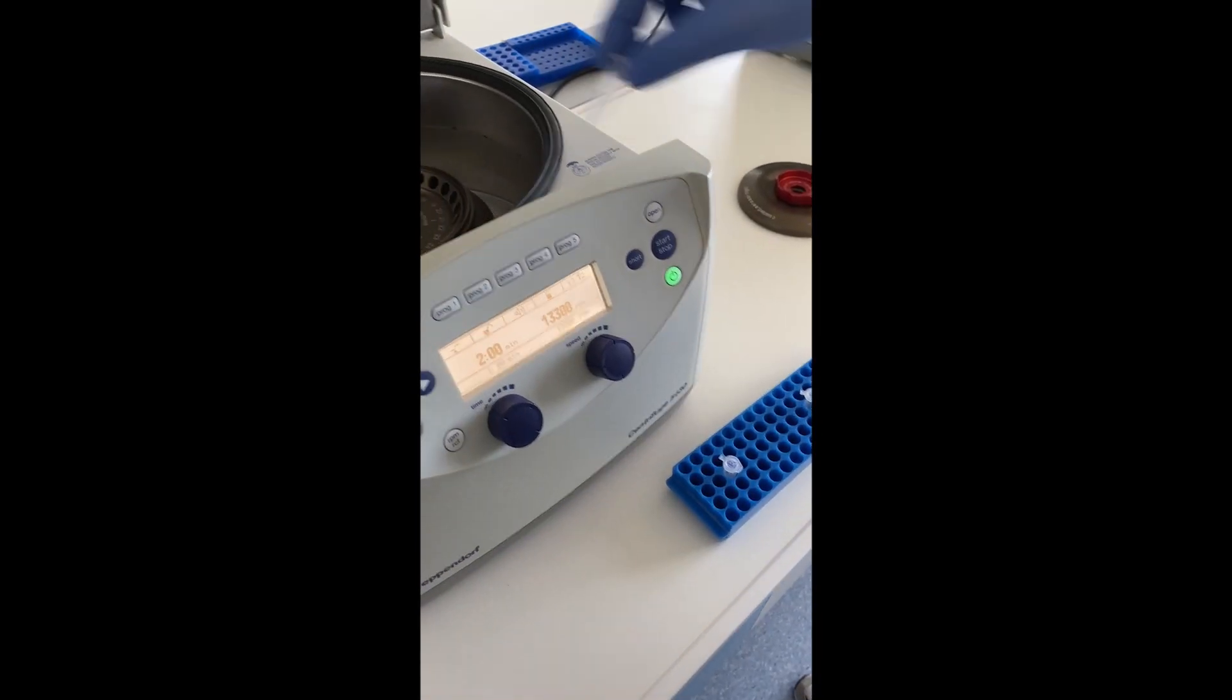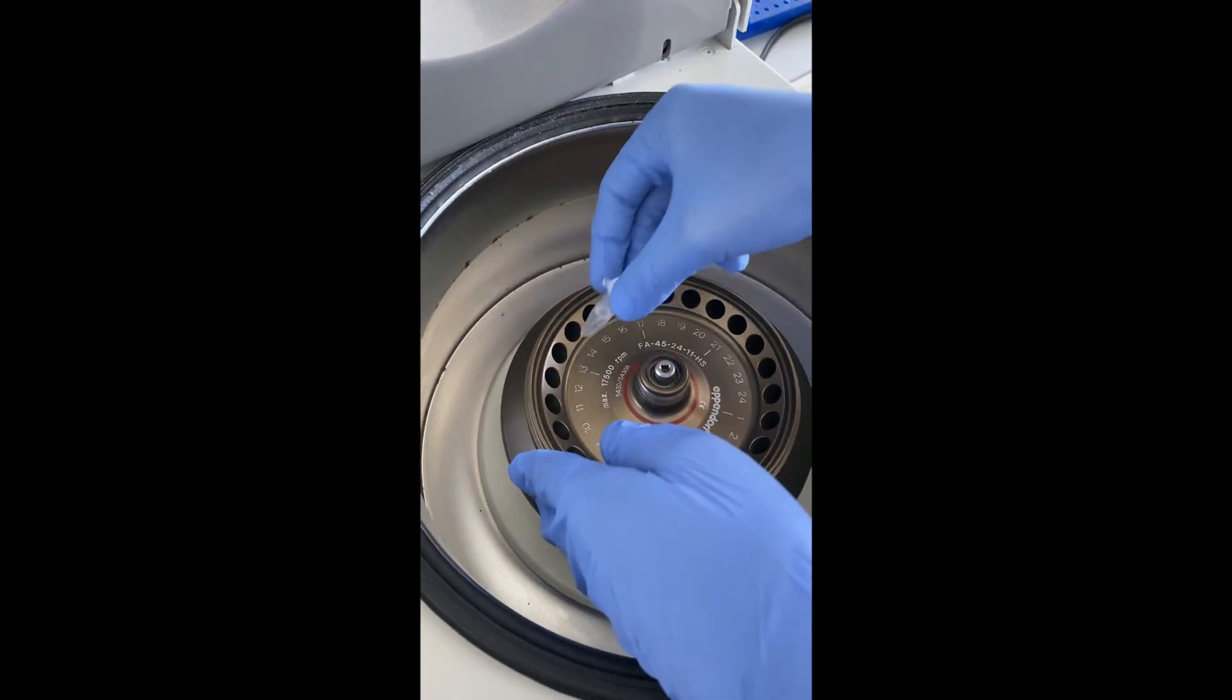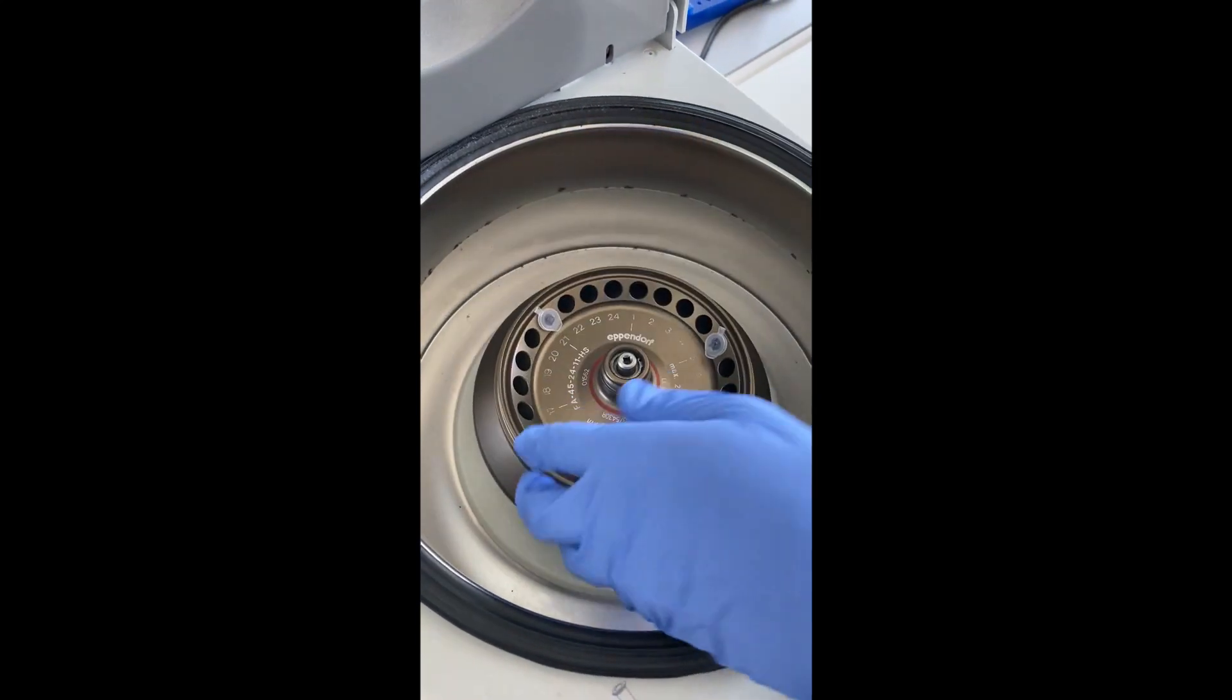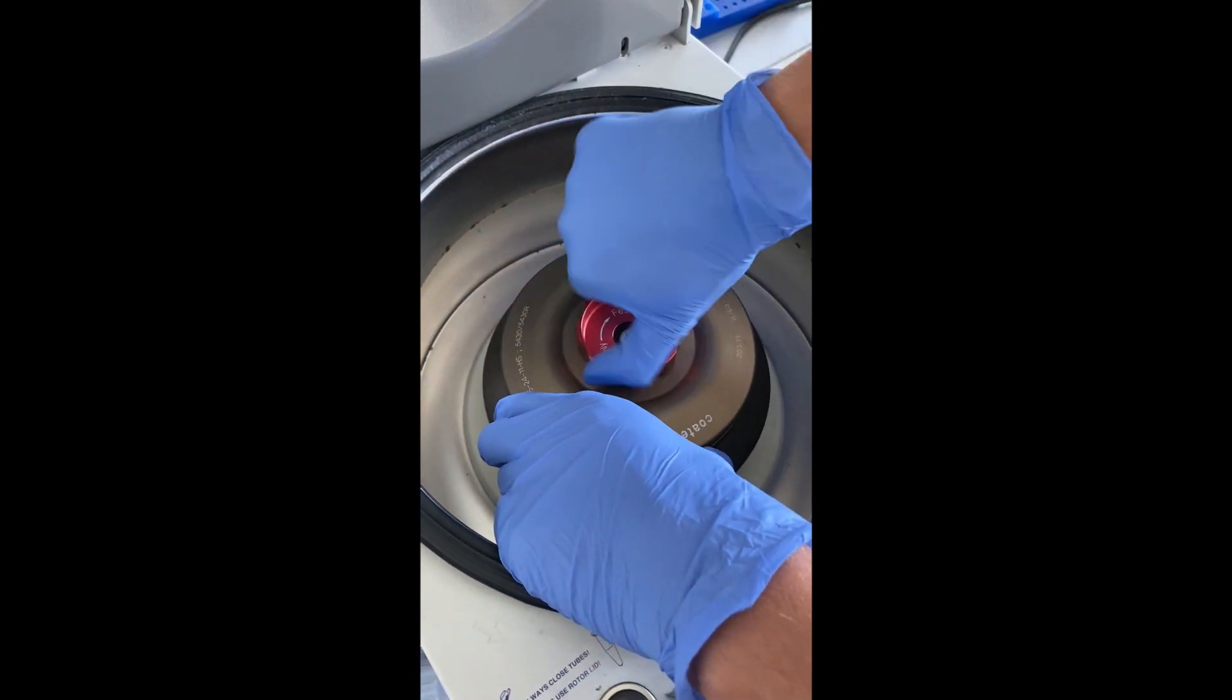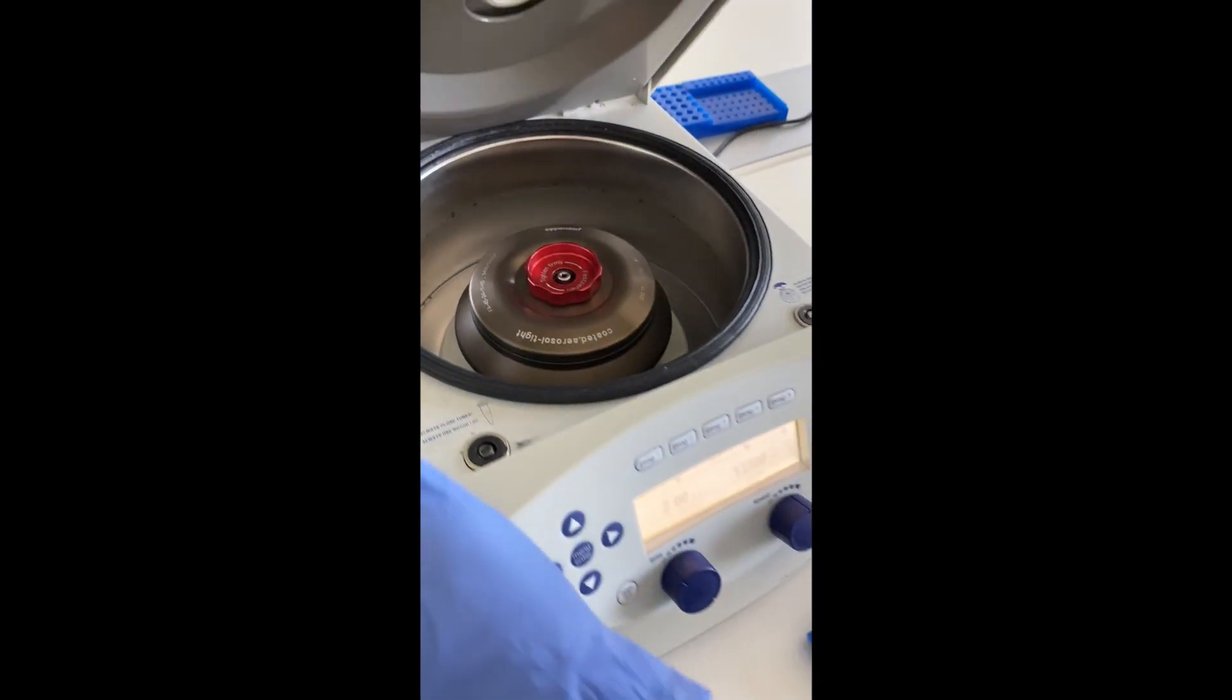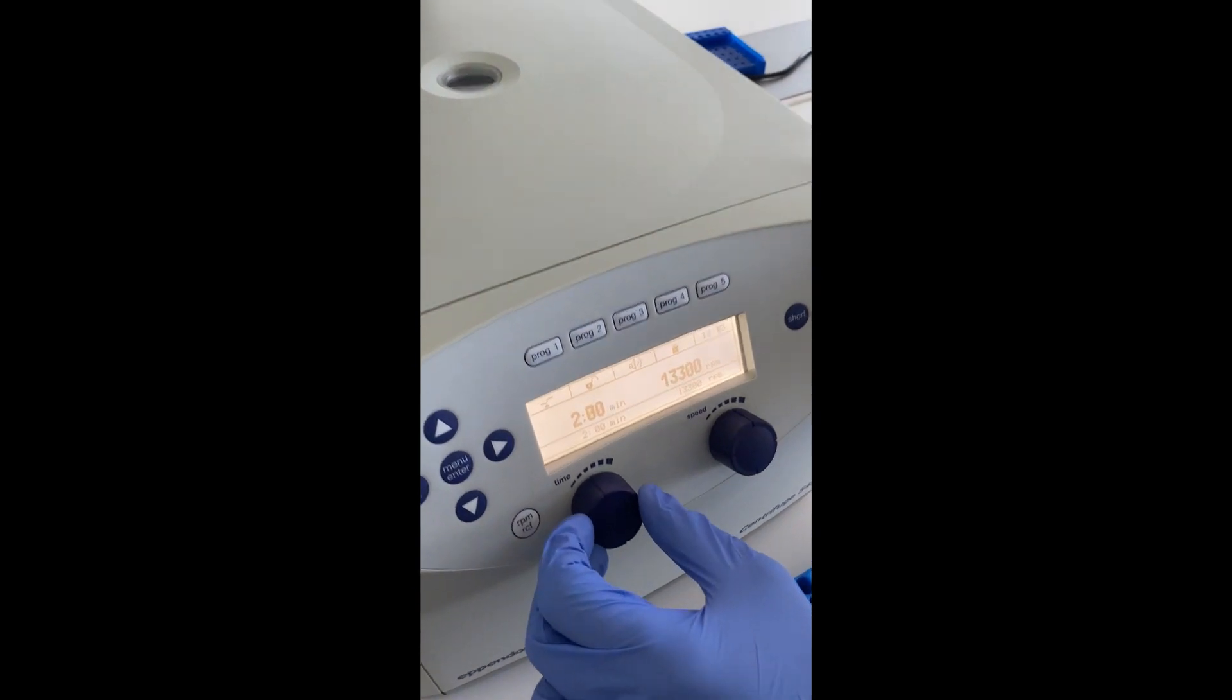The centrifuge has a wide application in the laboratory. It serves to separate the solid and liquid components of the sample by means of the centrifugal force acting on the sample during centrifugation. When inserting Eppendorf tubes into the centrifuge rotor, it is very important to ensure that the samples are evenly distributed and also to carefully close the rotor cover.